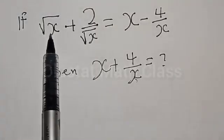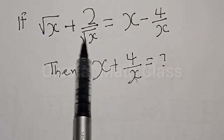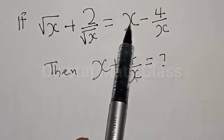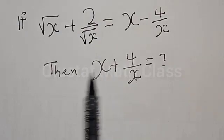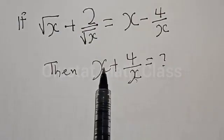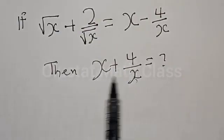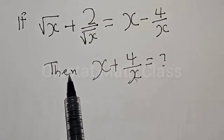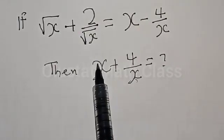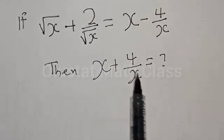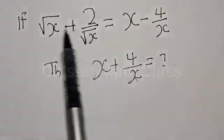If square root of s plus 2 divided by square root of s is equal to x minus 4 divided by x, then what is the value of s plus 4 divided by x? Hi everyone, welcome to my class. In today's class we want to look at how we can quickly find the value of s plus 4 divided by x from this given equation.